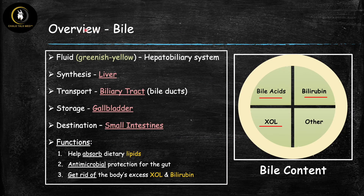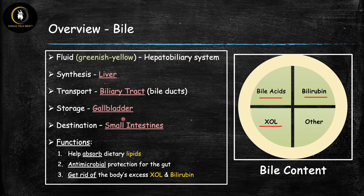Let's start with an overview of bile. Bile is a greenish-yellow colored bodily fluid. Just like urine is the fluid of the urinary system and blood is the fluid of the circulatory system, you can think of bile as the fluid of the hepatobiliary system — it's synthesized in the liver (hepato) and transported in the biliary tract (biliary). Along the way it's stored in the gallbladder, and its final destination is the small intestines.